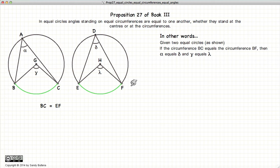So this proposition states that if we have two circumferences BC and EF in two equal circles, then the angle gamma and lambda will be equal and the angle at the circumferences, alpha and delta, will be equal.